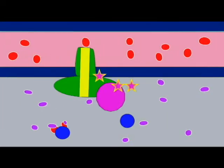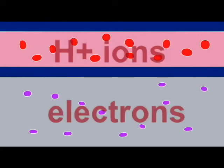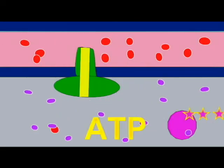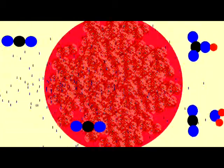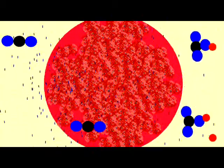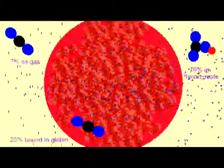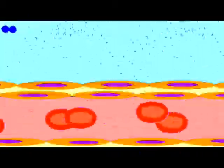All eukaryotes must release their waste carbon dioxide, which would otherwise become carbonic acid and alter pH, and acquire the needed oxygen to power their metabolic reactions.